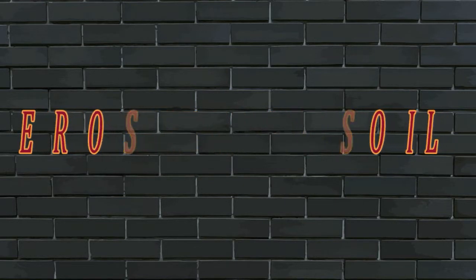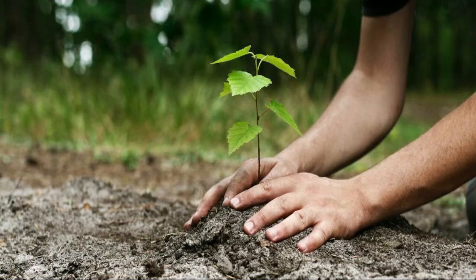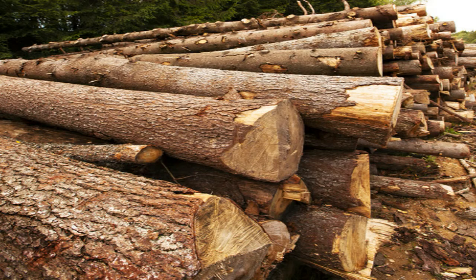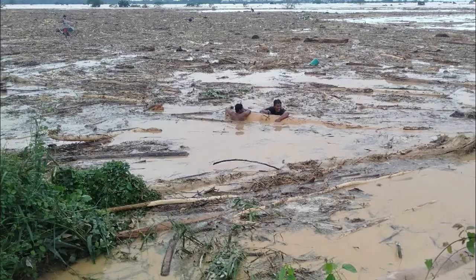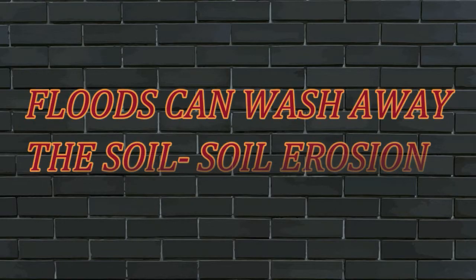Erosion of Soil. People cut down trees in the forest for their needs. Most often, people do not plant new trees. Too much cutting down of trees results in forest denudation. When people do not plant new trees, floods can occur when heavy rains come. This is because very few trees are left to hold water underground. Floods can wash away the soil. This is called soil erosion.